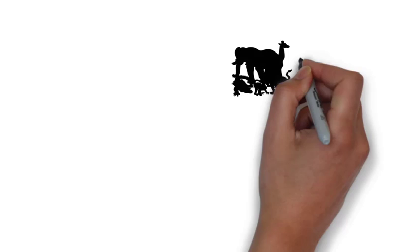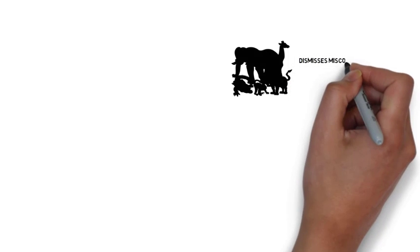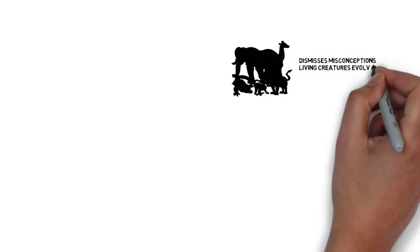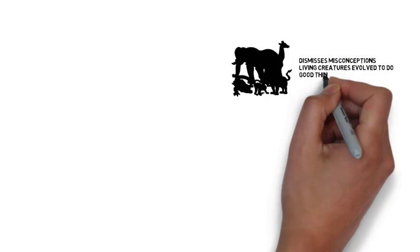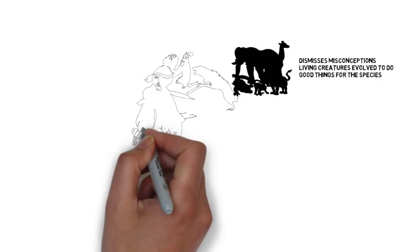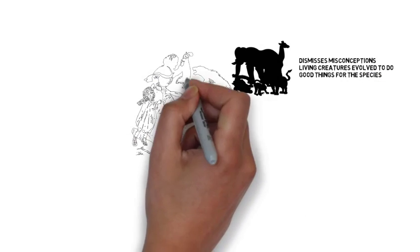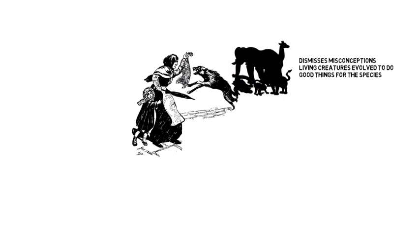Dawkins dismisses misconceptions of altruism in biology that living creatures have evolved to do good things for the species or the group. This belief is common because we see it in reproduction and parental care towards the young.